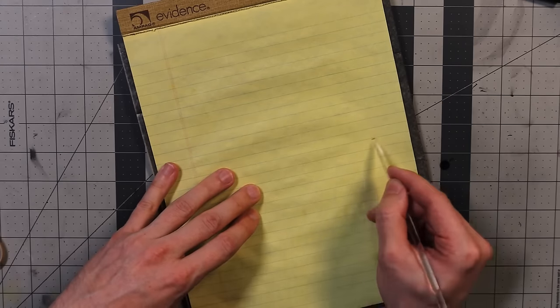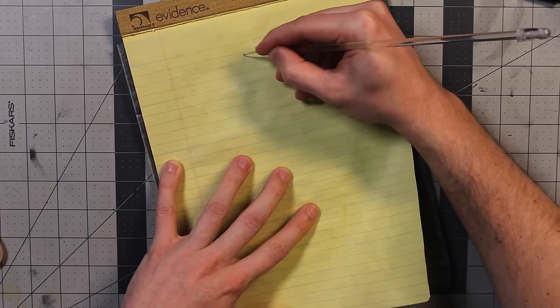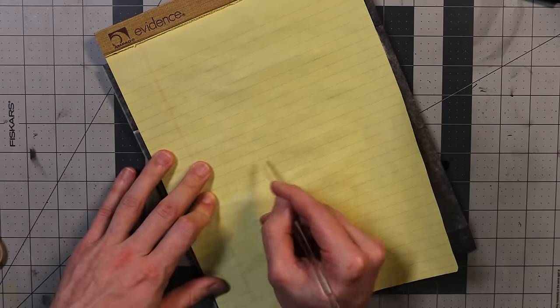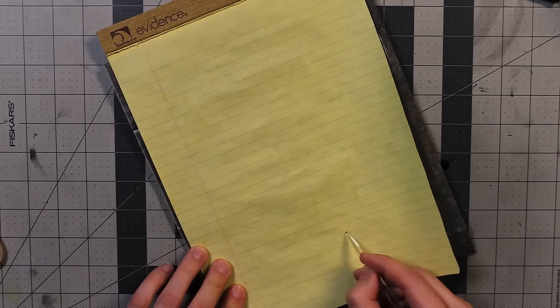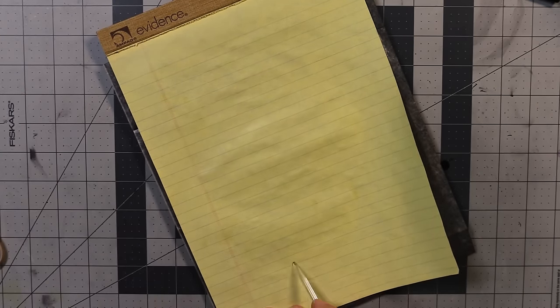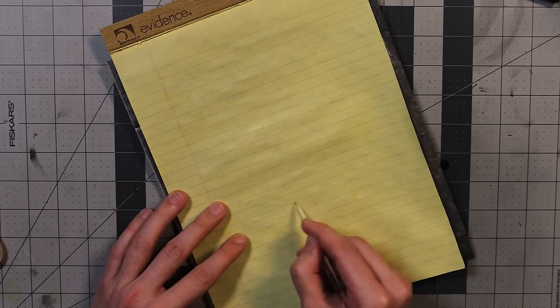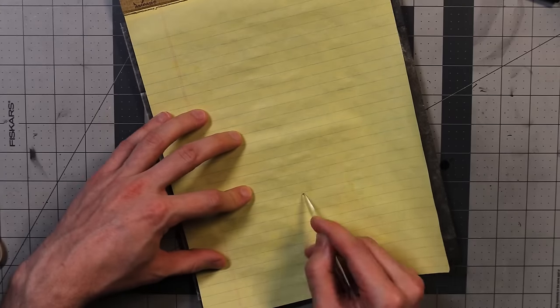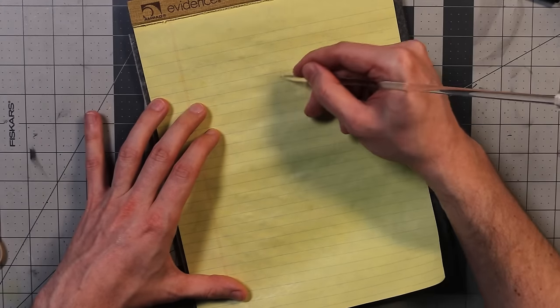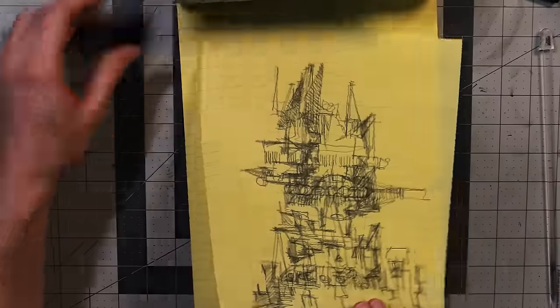Because I didn't know what I was doing, I wasn't overthinking any of it, so it was very freeing in that sense. It's like when you can't see what you're doing, it's impossible to make a mistake. You can't beat yourself up about drawing a line in the wrong place when you have no idea where the line is in relation to all the other lines. So it's easy to get off your own back in that sense.